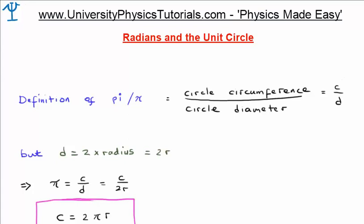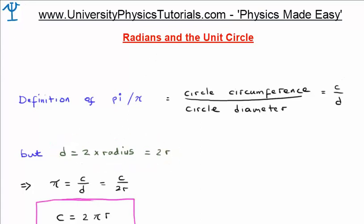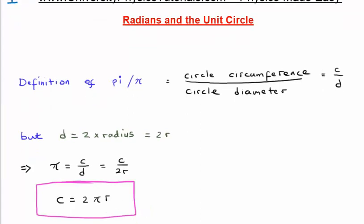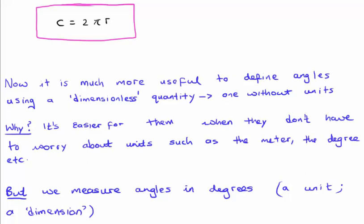First of all, we know that the diameter of a circle is twice the radius, in other words d is equal to two times r. By inserting this into our definition of pi and rearranging, we find that the circumference of a circle is equal to twice pi times the radius. From this simple expression, we are very easily able to move on to the concept of radians.